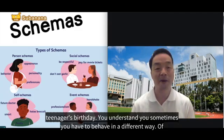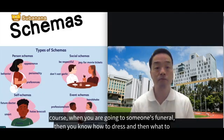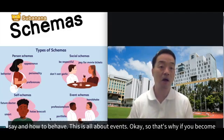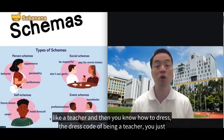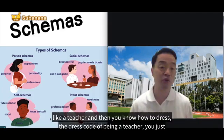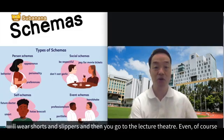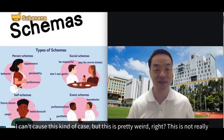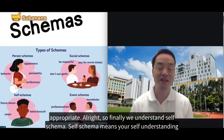For a small child's birthday versus an adult's or teenager's birthday, you understand you have to behave differently. Similarly, when meeting someone on the road, you know how to dress, what to speak, and how to behave. For instance, as a teacher, the event schema tells you the dress code — you would not wear shorts and slippers to a lecture theater, even though I have come across such cases, which is pretty weird and not really appropriate.